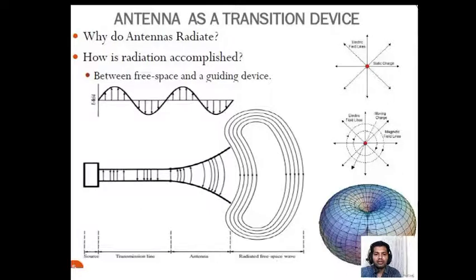Now we see about antenna as a transition device. Why do antennas radiate? We have two fields: electric and magnetic field. Both fields are mutually perpendicular to each other. Consider a static charge at a place.